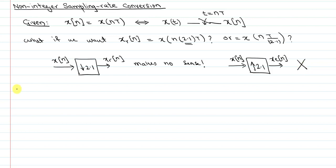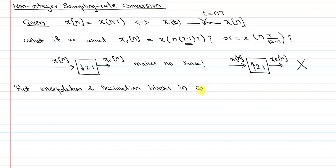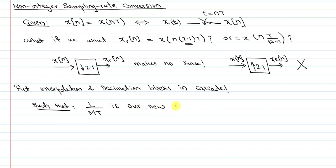To do that, we put interpolation and decimation blocks in cascade. We will use those blocks such that L over M times T is our new sampling rate. When we put them in cascade, our new sampling rate will be L over M·T. So if L is smaller than M, then we are decreasing the sampling rate.